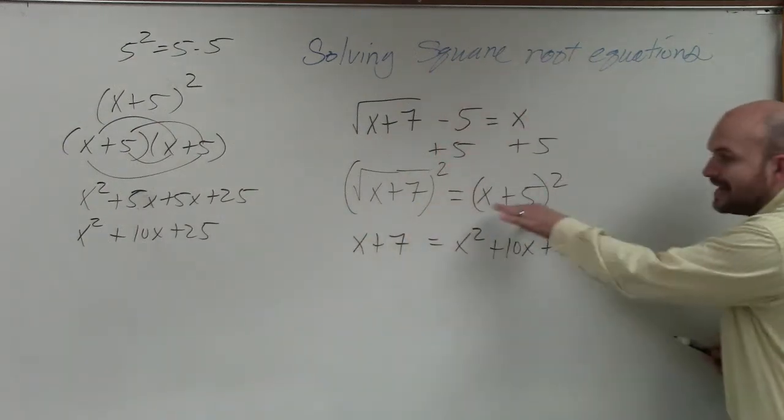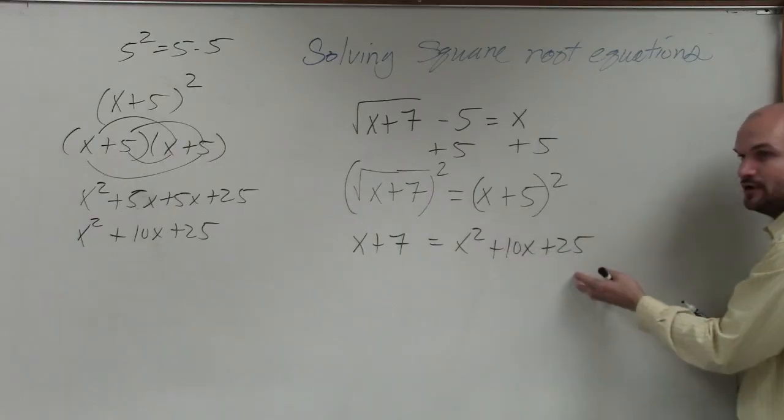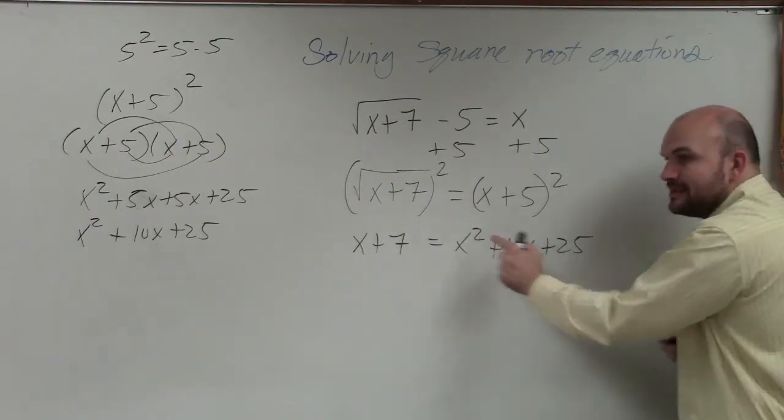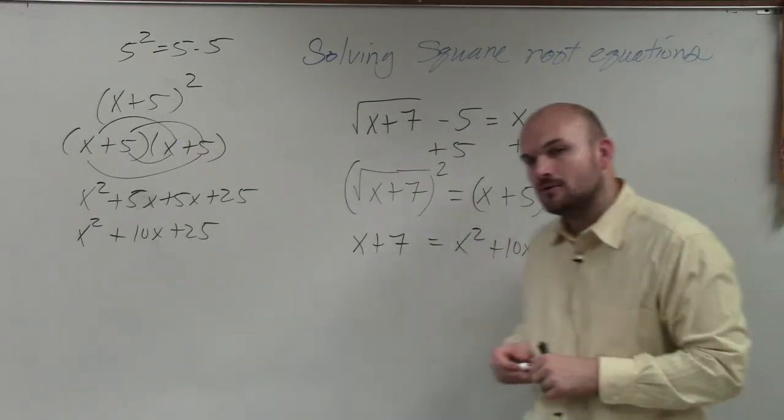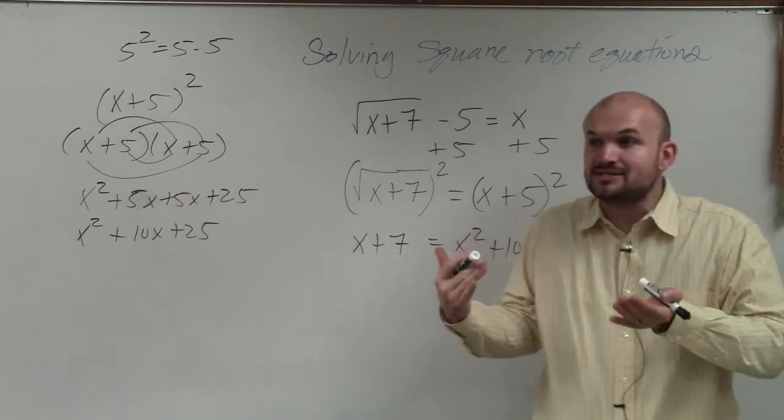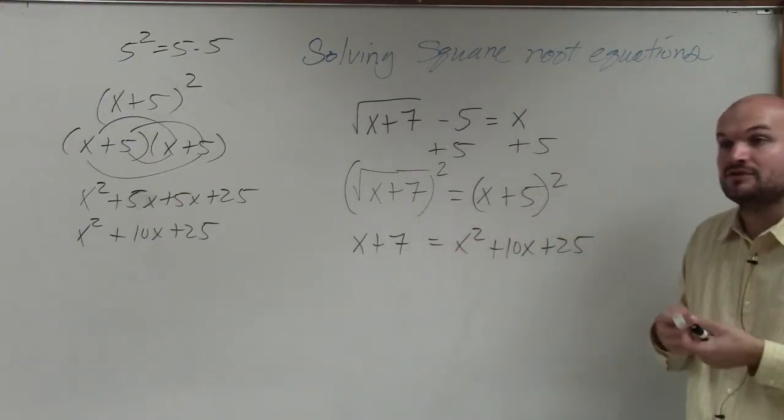OK. So x plus 5 squared, guys, is a trinomial. Now you guys can see we have a quadratic. Oh, we talked about solving quadratics. We can't solve quadratics using linear properties.